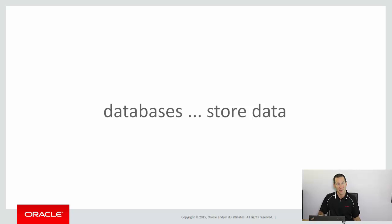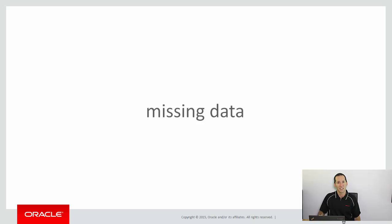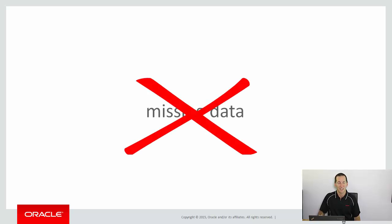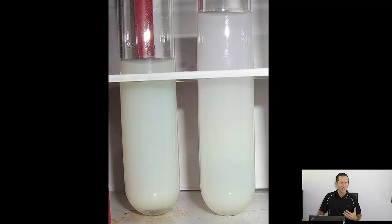Databases store data obviously, but the problem is what they don't store is missing data — because if they did, it wouldn't be missing anymore. Finding data that is missing is quite a challenge. Let's look at an example: say we're a laboratory firm and we collect samples, and we're meant to collect lab samples every single day.